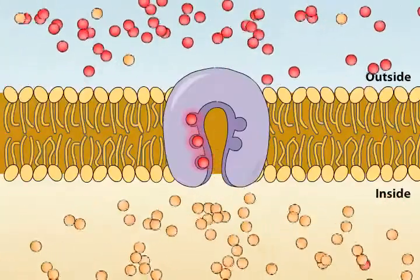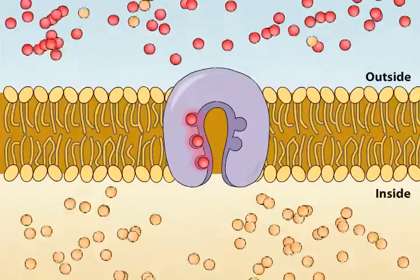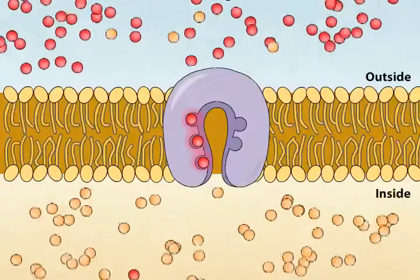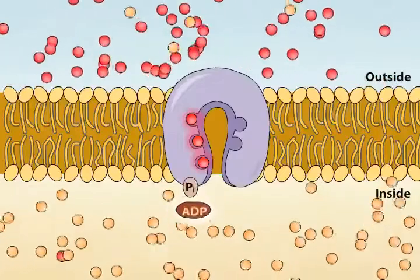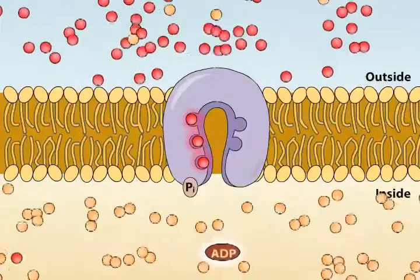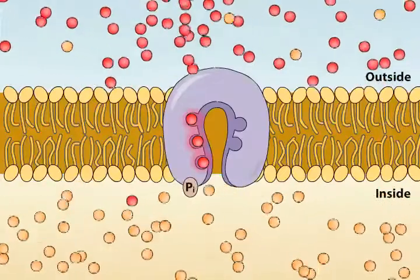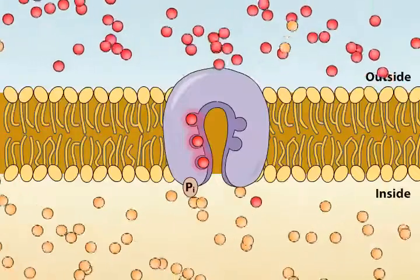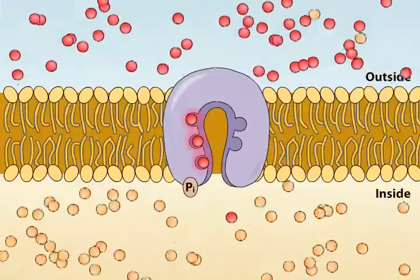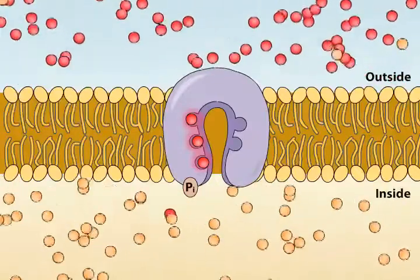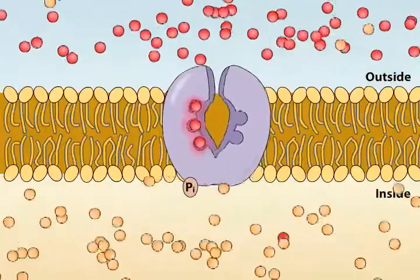When bound by sodium, the pump is a substrate for phosphorylation by the high-energy molecule ATP. The energy requirement in this step is estimated to account for 20 to 40 percent of the brain's energy consumption. The phosphorylation triggers a conformational change in the pump.